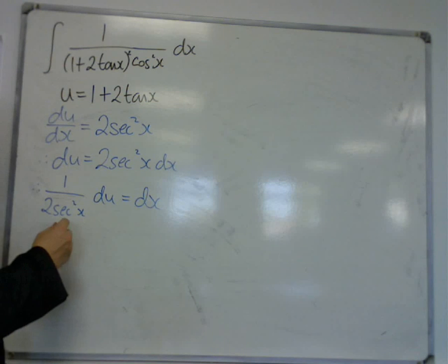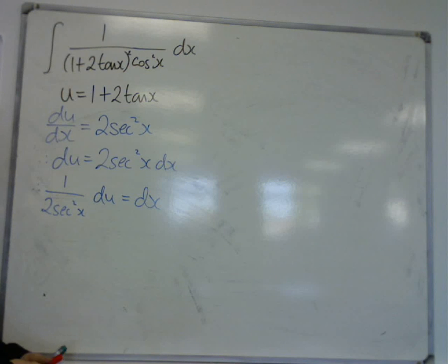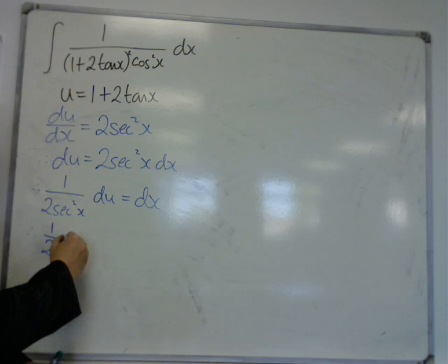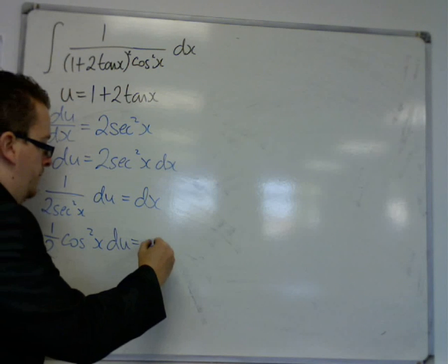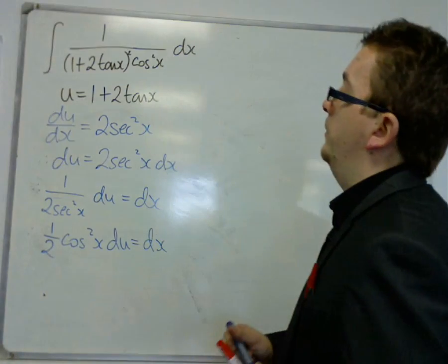Now, sec squared is 1 over cos squared. So, if you've got 1 over sec squared, then that's just cos squared. So, we've actually got 1 half cos squared x du is dx. So, let's see what happens.